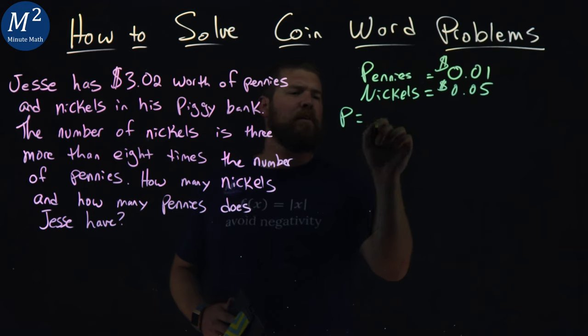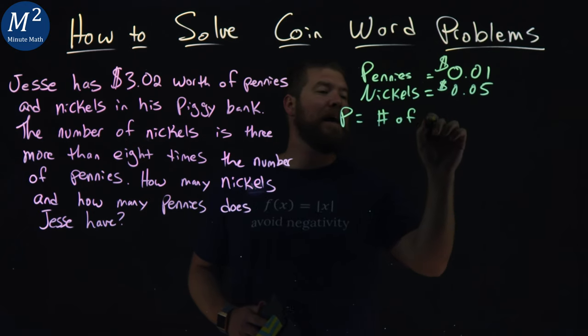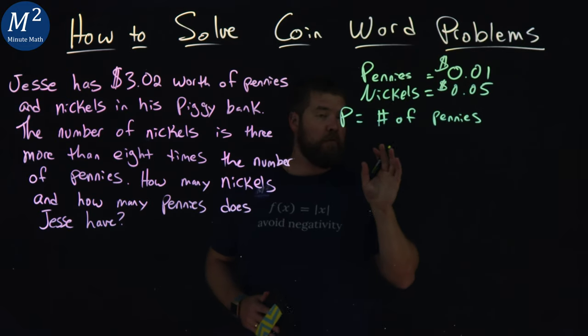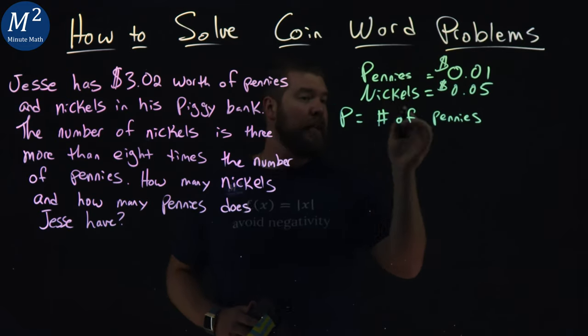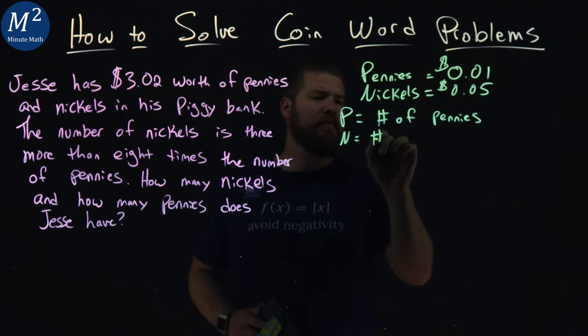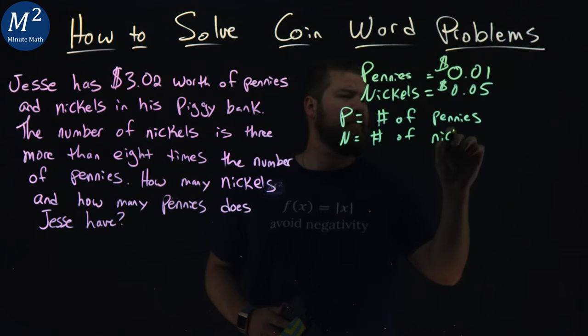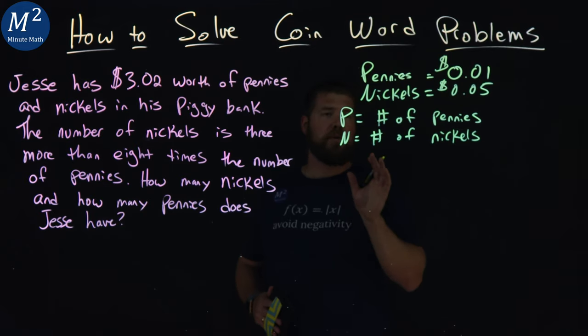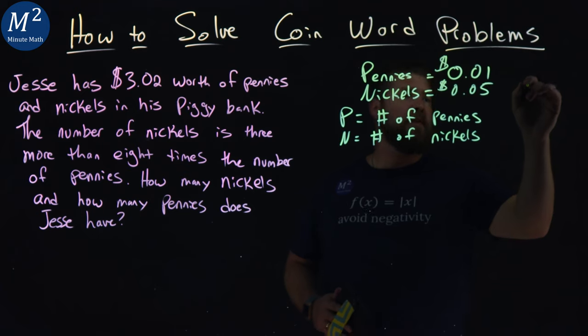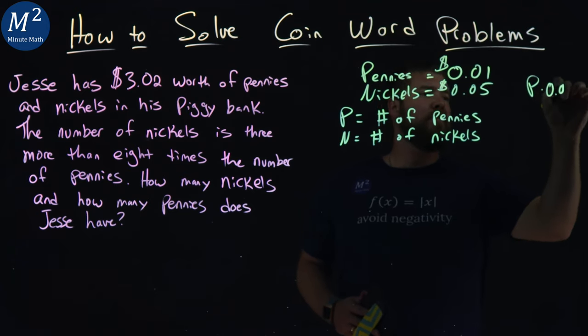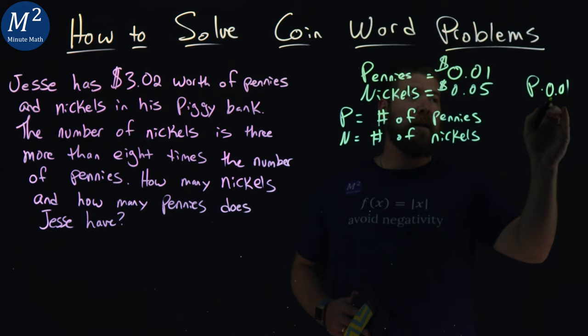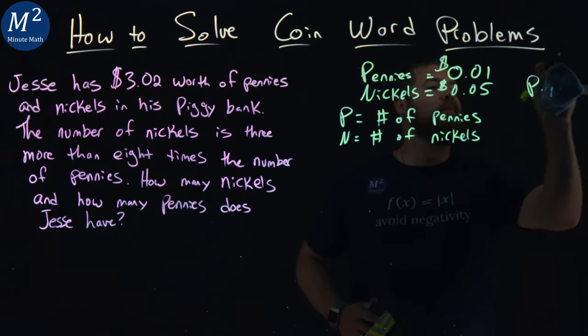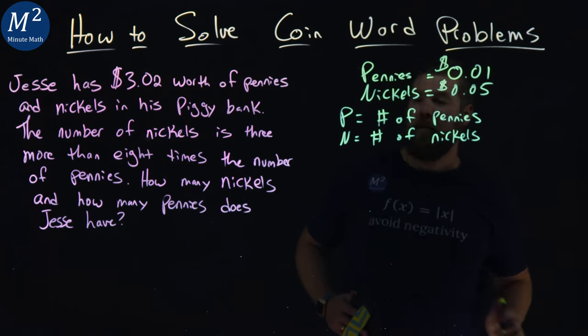Let's let p equal the number of pennies. So if p is the number of pennies and n is the number of nickels, we want to find the total cost.